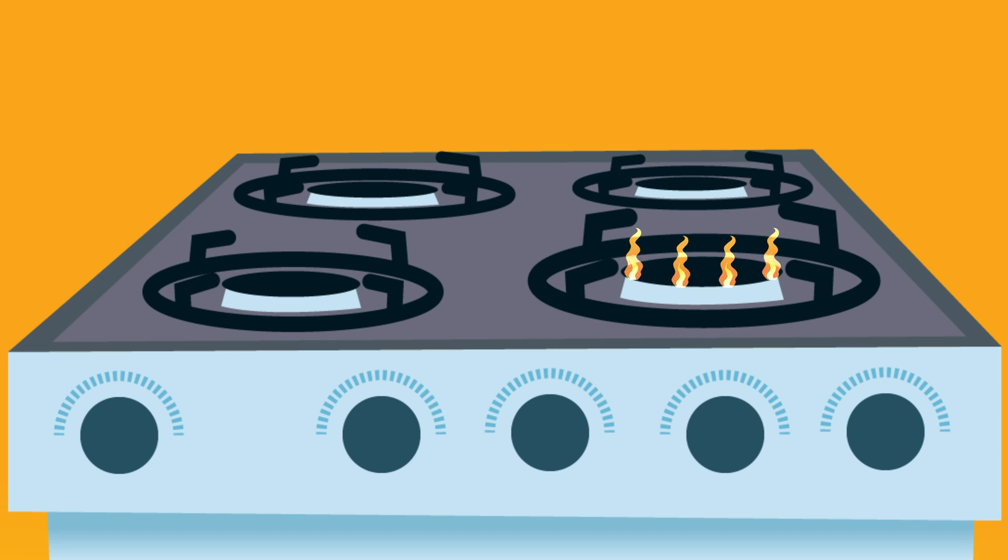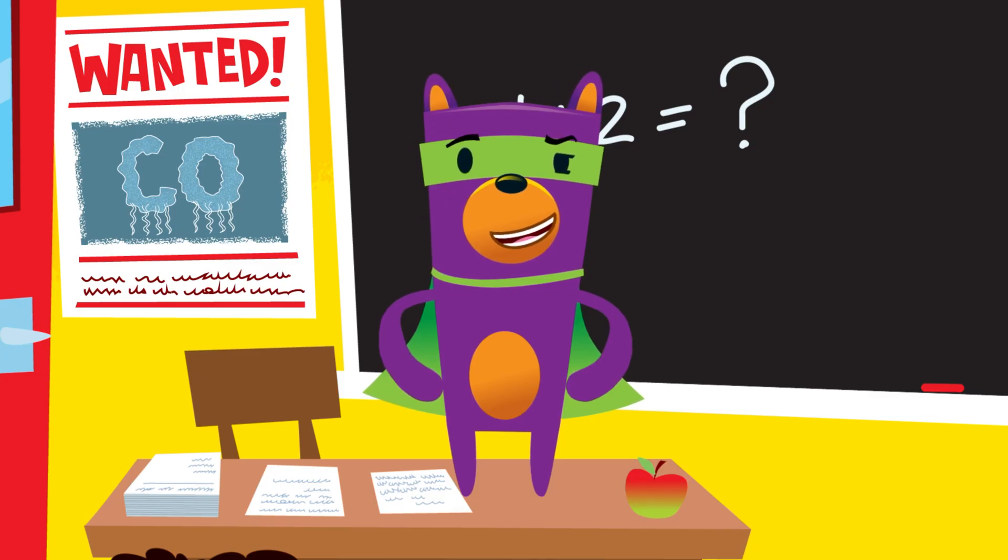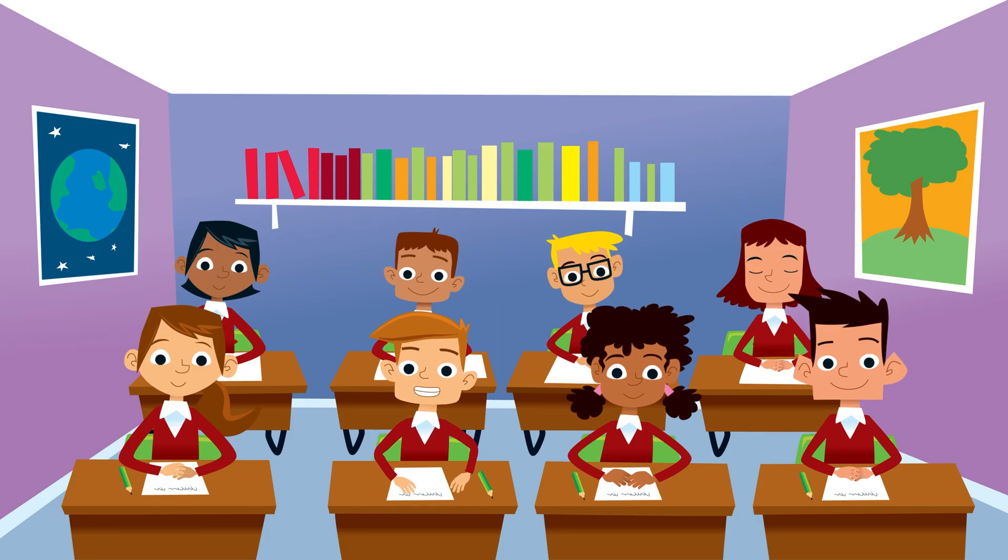Correct! If your gas cooker is burning with an orange flame, it's a clear sign that it's not working properly and needs to be checked by a specialist. Cookers should burn with a nice healthy blue flame. A blue flame, got it.